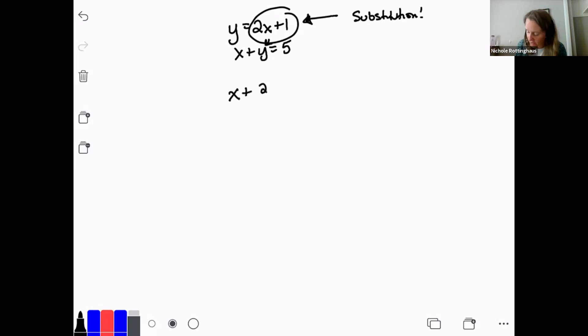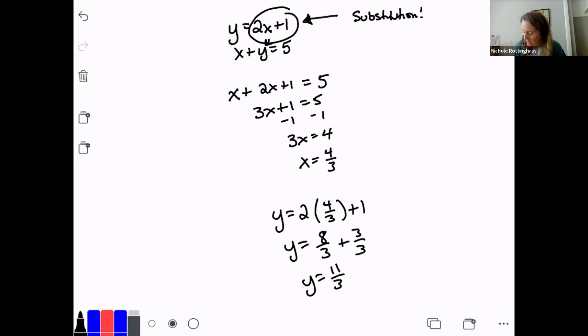So x plus 2x plus 1 equals 5. So 3x plus 1 equals 5. Subtract 1. 3x equals 4. So x equals 4 over 3. And then now I need to solve for y. So I got a fraction. So I'm going to plug into the first equation. Y equals 2 times x, which is 4 thirds plus 1. Y equals 8 thirds plus 1, but 1 is the same as 3 over 3. So y equals 11 thirds. And so my answer is 4 thirds comma 11 thirds. If you want to rewrite them as mixed numbers, you can, but you don't have to. You could leave them as an improper fraction. And I'm okay with that. So that was substitution. That was an example of when you should use substitution, when you have one of your equations already solved for a variable.